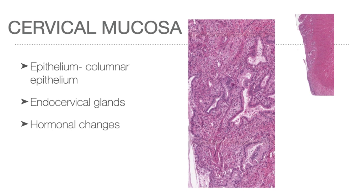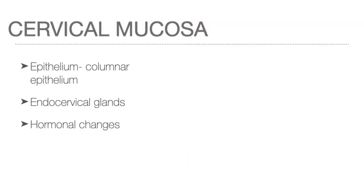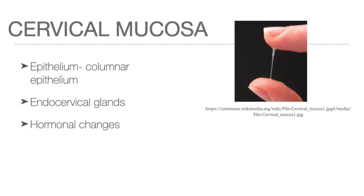Secretion of the cervical glands is influenced by changing hormones. Near ovulation, the cervical gland secretion is thin and filmy, while secretion during the luteal phase is thick and curd-like. The consistency of cervical discharge can be used as a contraceptive method known as the Billings ovulation method. Immediately after ovulation, the cervical mucus is clear and slippery like raw egg white — referred to as Spinnbarkeit, a German word meaning stretchable — resulting from high estrogen levels, making it easier for sperm to penetrate.